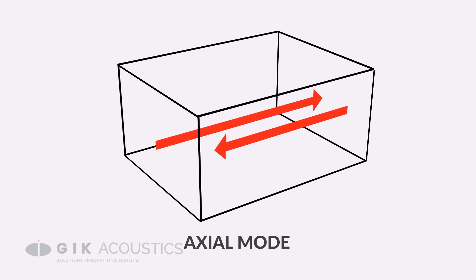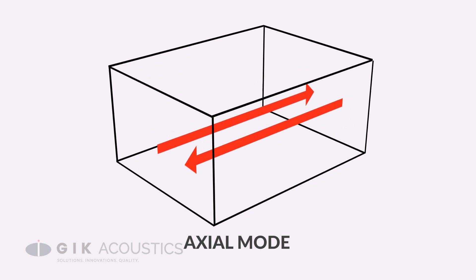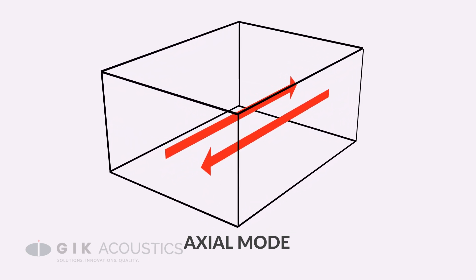This is all actually an example of an axial room mode. Axial room modes are the strongest of the three types of room modes and the ones we'll be focusing on.